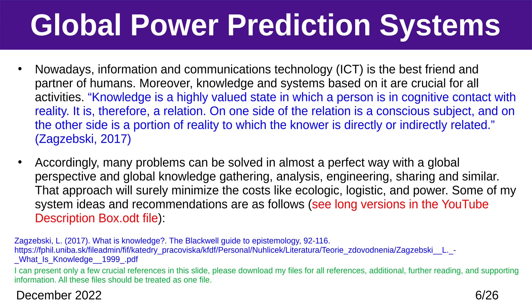Nowadays, Information and Communications Technology is the best friend and partner of humans. Moreover, knowledge and systems based on ICT are crucial for all activities. Accordingly, many problems can be solved in an almost perfect way through global knowledge-gathering, analysis, engineering, sharing, and similar approaches. That will surely minimize costs — ecological, logistical, and power-related.